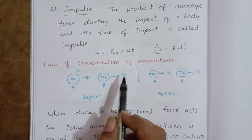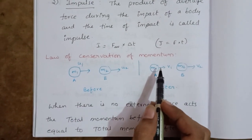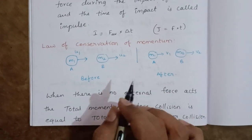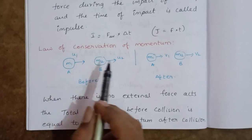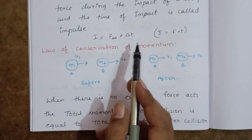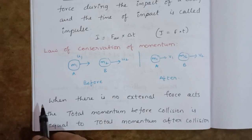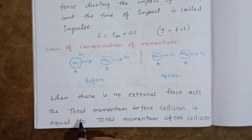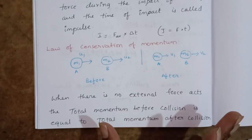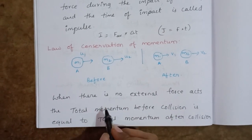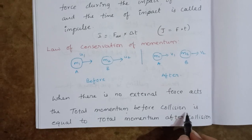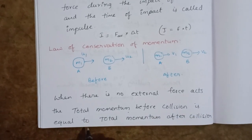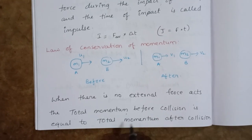Next, law of conservation of momentum. The law of conservation of momentum states that the momentum of the system is conserved when there is no external force acting on a body. That is, the total momentum before collision is equal to the total momentum after collision.